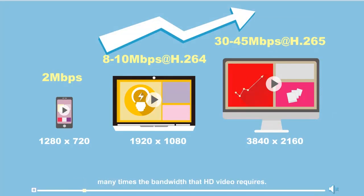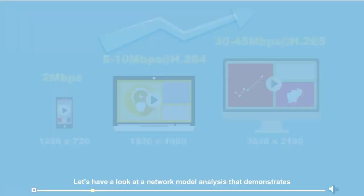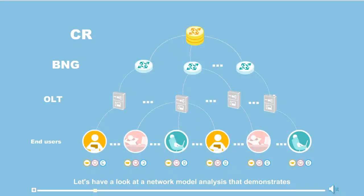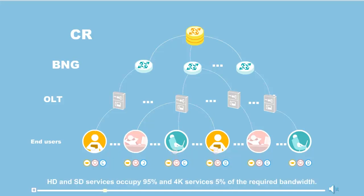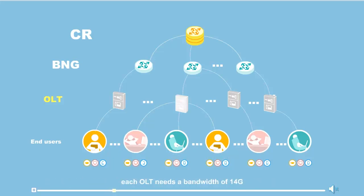Large bandwidth is therefore the basic criteria for successful 4K video transmission. Looking at a network model analysis that demonstrates the booming demand for 4K bandwidth: each OLT is connected to an average of 2,000 end users. During the initial phase of 4K construction, high-definition and standard-definition services occupy 95 percent, and 4K services five percent of the required bandwidth.